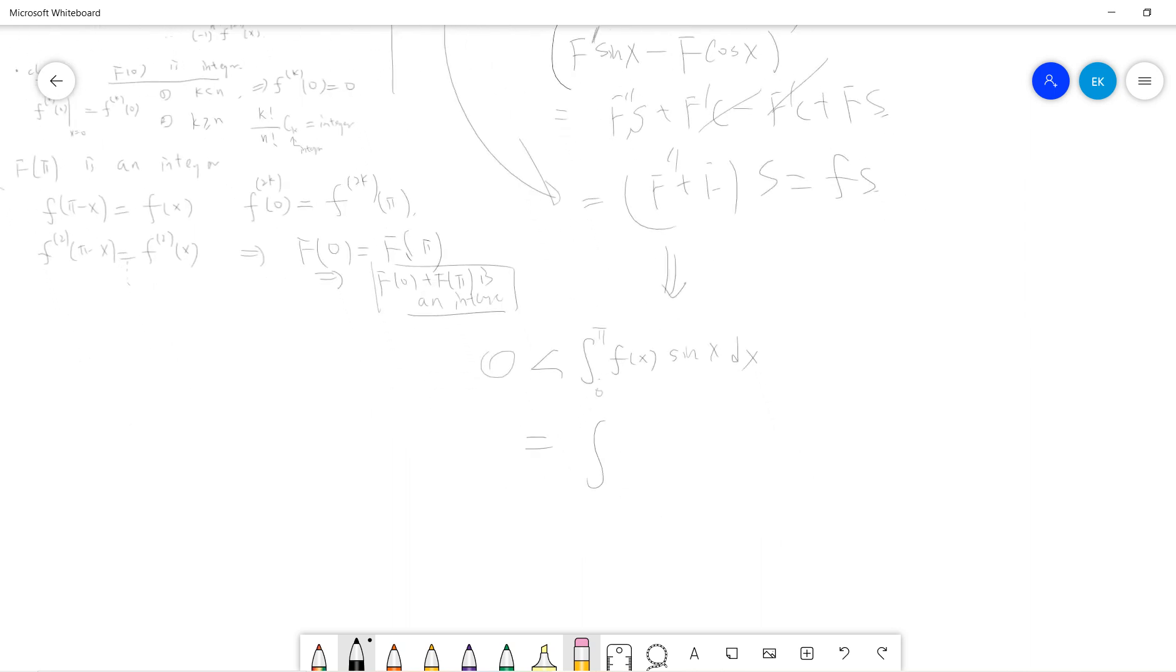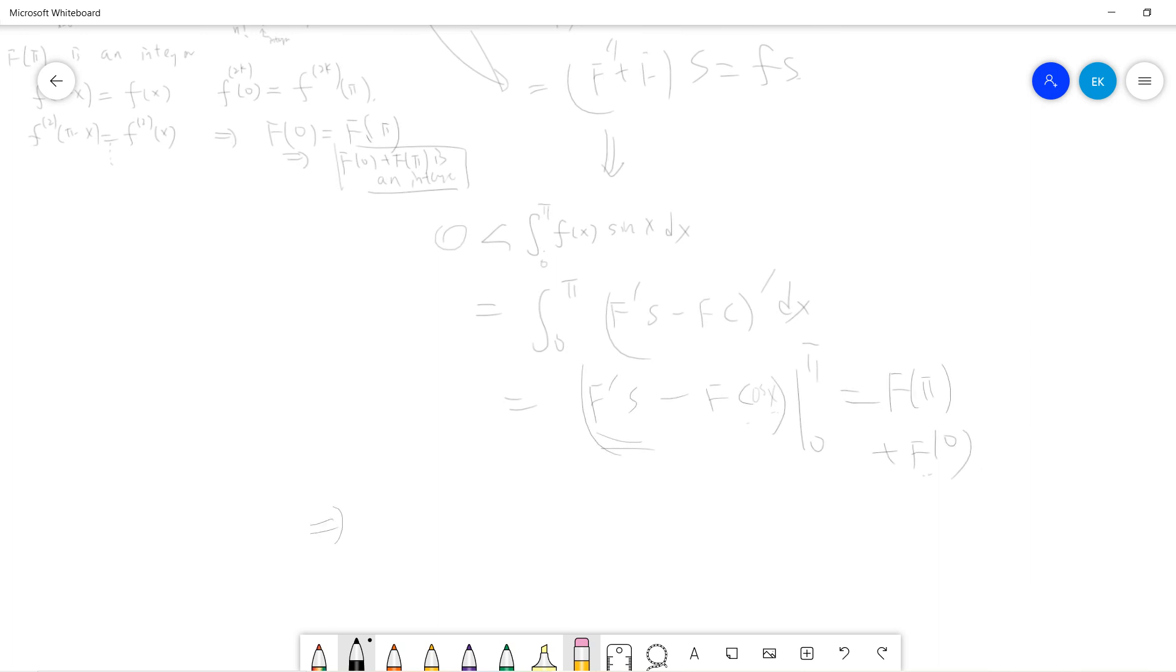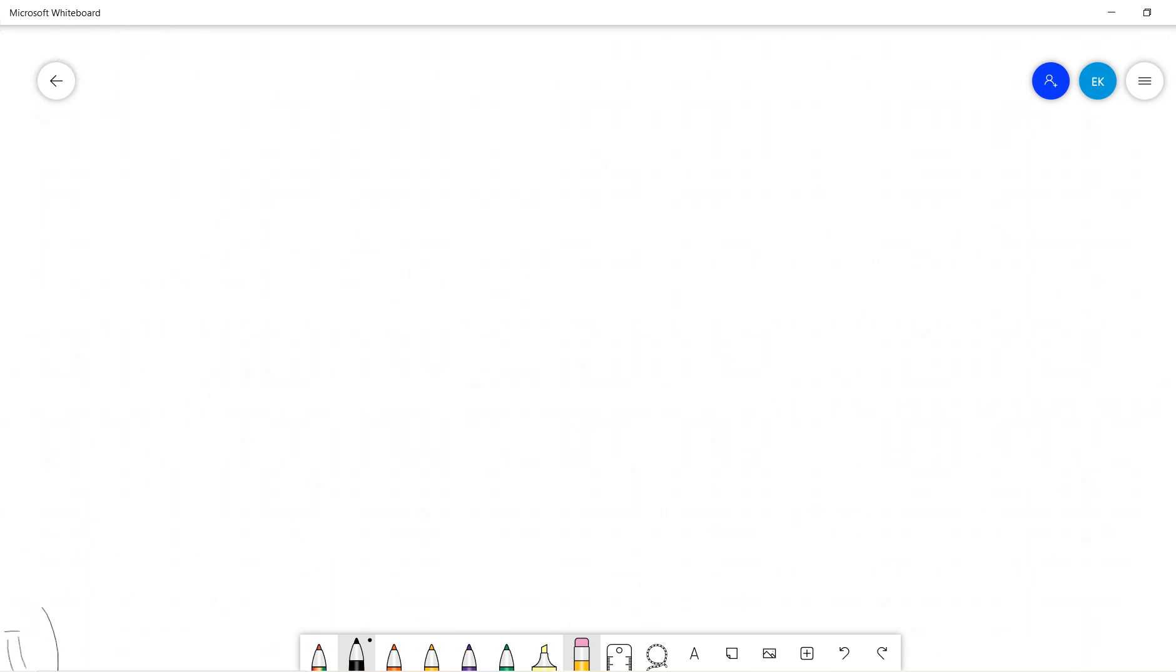I can compute this, because I know that this is the integral of [F'(x)sin(x) - F(x)cos(x)]dx. So it's [F'(x)sin(x) - F(x)cos(x)] evaluated from 0 to π. The sine terms are 0, because sin π and sin 0 are both 0. So this is F(π) plus F(0), because cosine π is negative 1. Since F(0) plus F(π) is an integer, and we also know this integral is greater or equal to 0, let's quickly go to the final step to combine all of it.